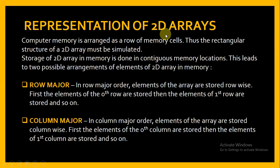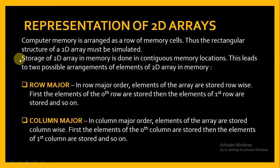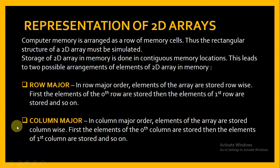Now, representation of 2D arrays. Computer memory is arranged as a row of memory cells, thus the rectangular structure of a 2D array must be simulated. Usually we represent a 2D array using a rectangular structure, but in memory it is not stored like this — it is stored in a different fashion. Storage of 2D array in memory is done in contiguous memory locations, just like a 1D array. Elements of a 2D array are also stored in contiguous memory locations, and this leads to two possible arrangements: row major and column major.